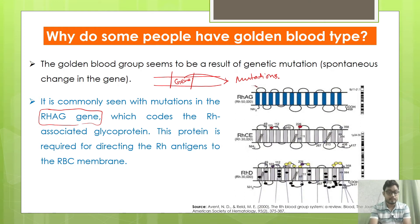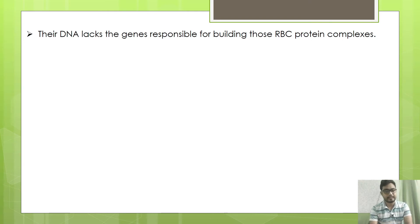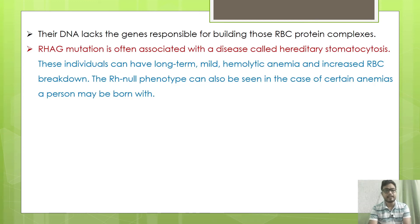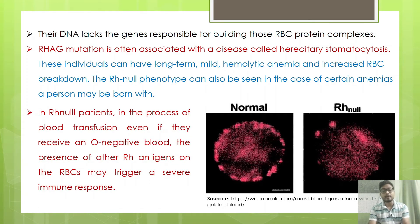The golden blood type arises whenever mutations occur in the RHAG, RHC, or RHD genes. These mutations create the golden blood phenotype because the DNA lacks the genetic instructions responsible for building RBC protein complexes, that is, RBC antigens. RHAG mutations are often associated with a disease called hereditary stomatocytosis, and these individuals can have long-term or mild hemolytic anemia and increased RBC breakdown.